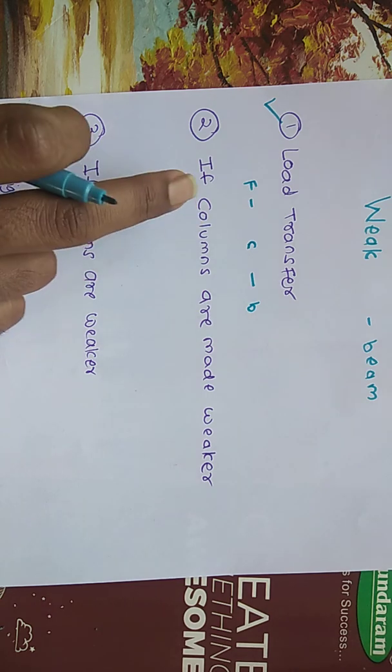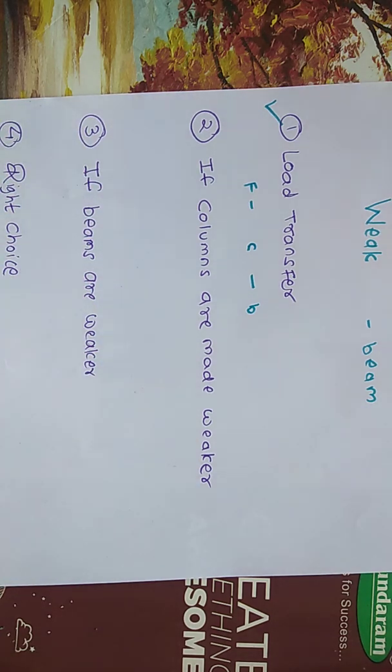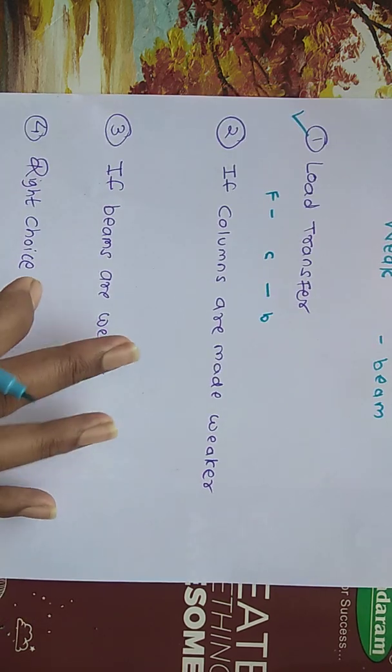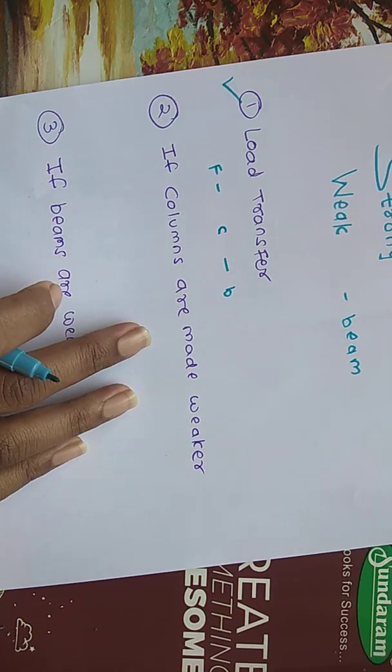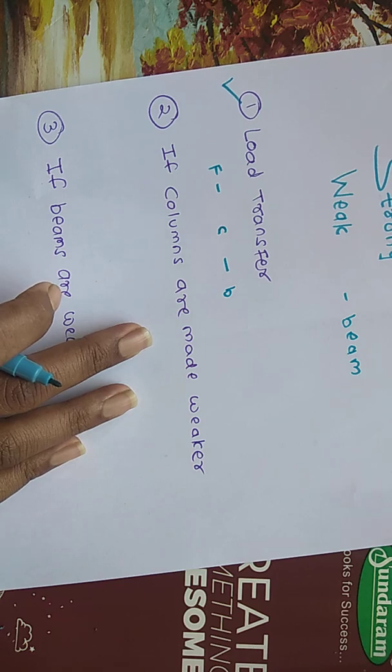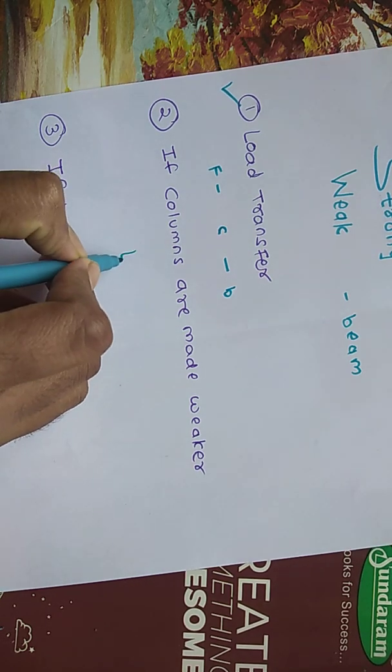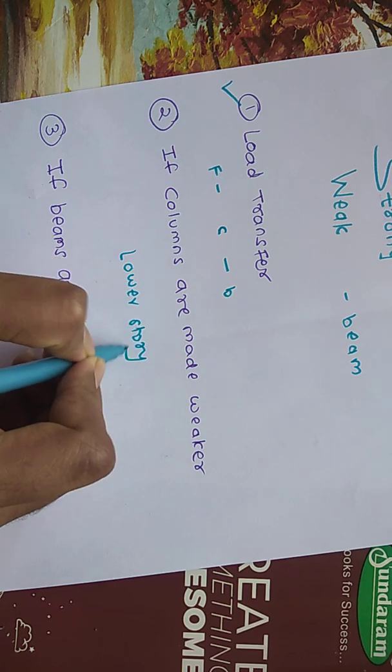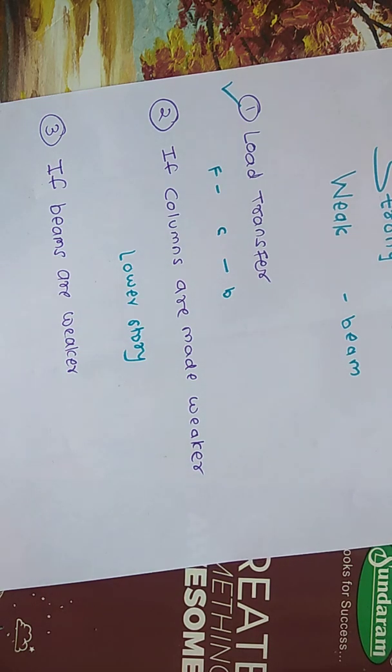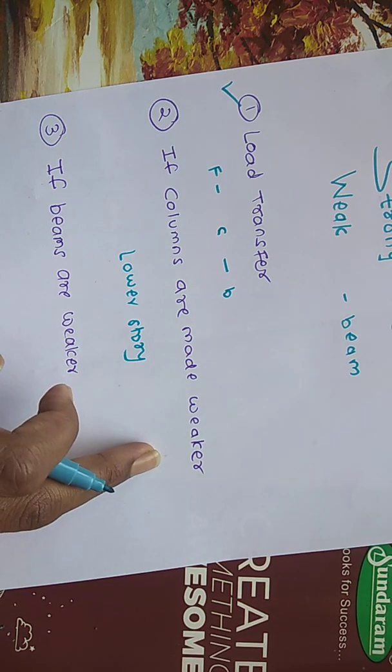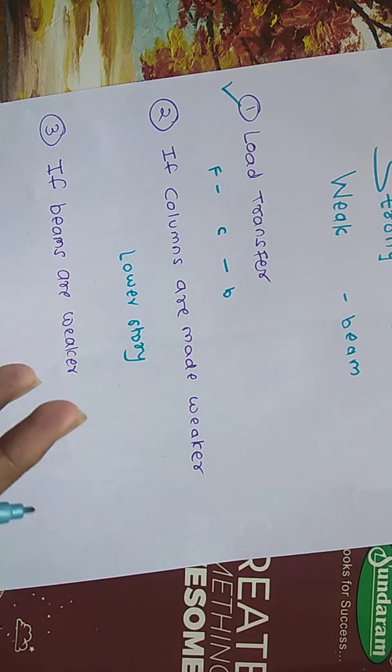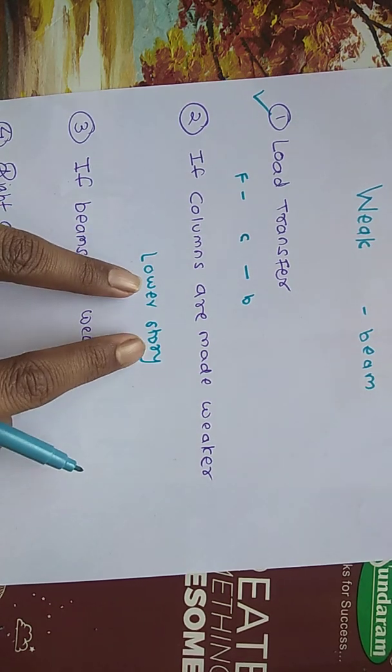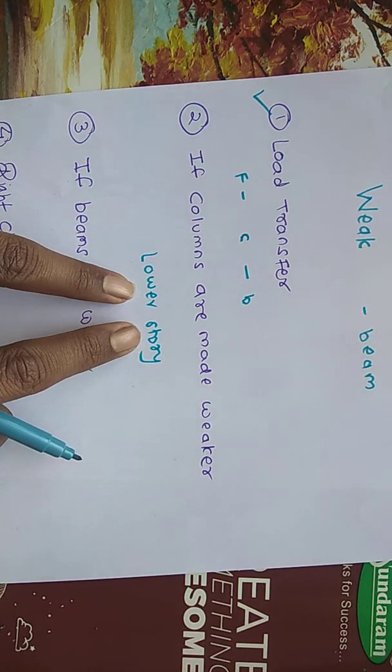Now let's discuss what will happen if columns are made weaker. If columns are made weaker, they suffer severe local damage, especially at the joint of the lower story. This damage can lead to collapse of the building, although the columns at the upper story are undamaged.